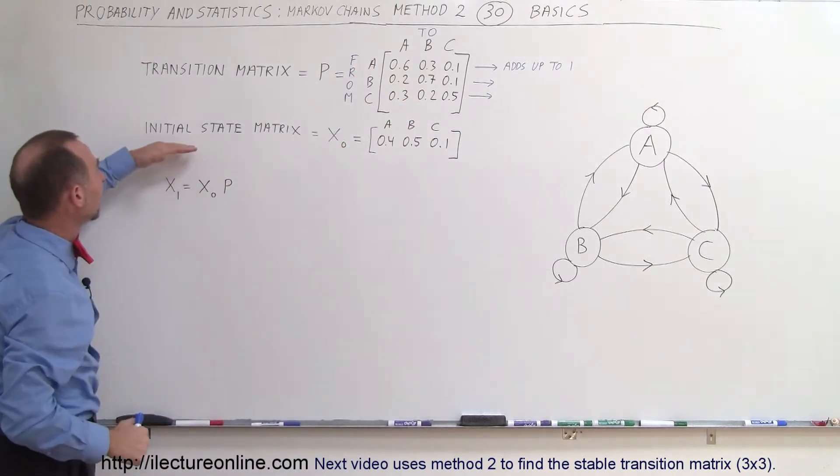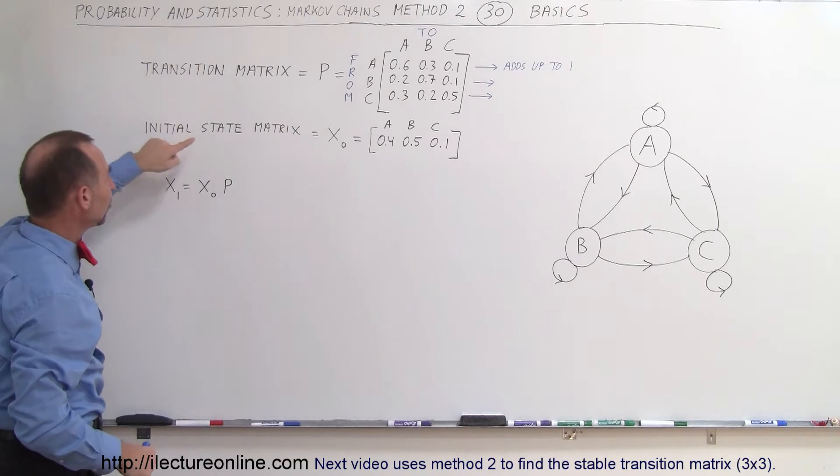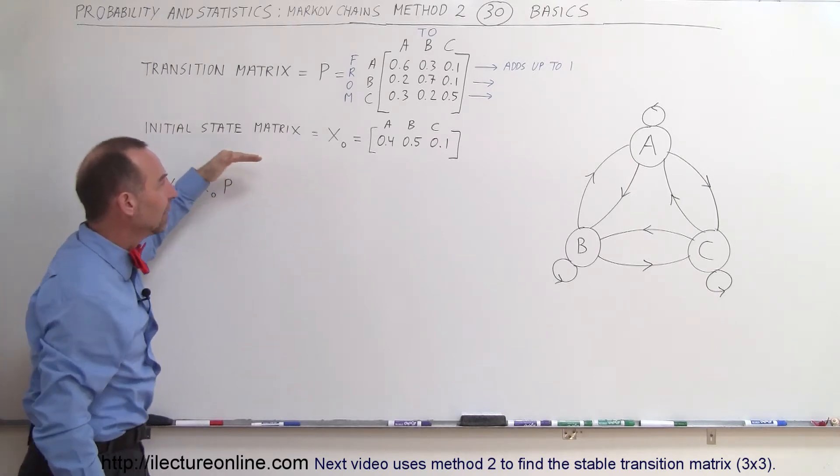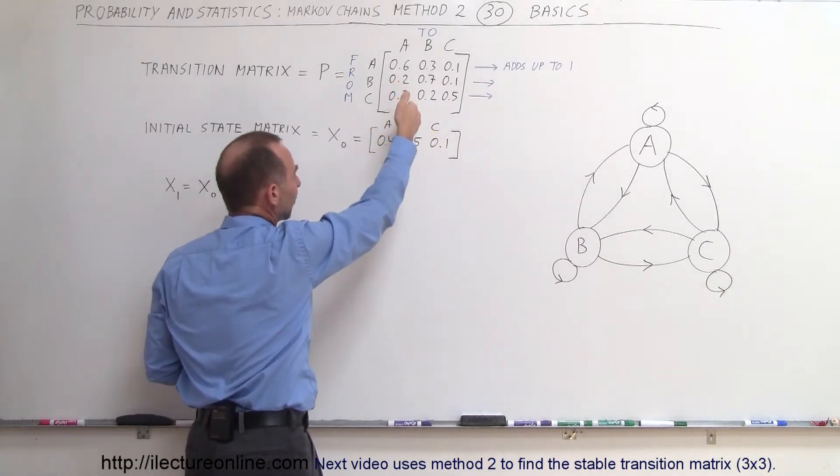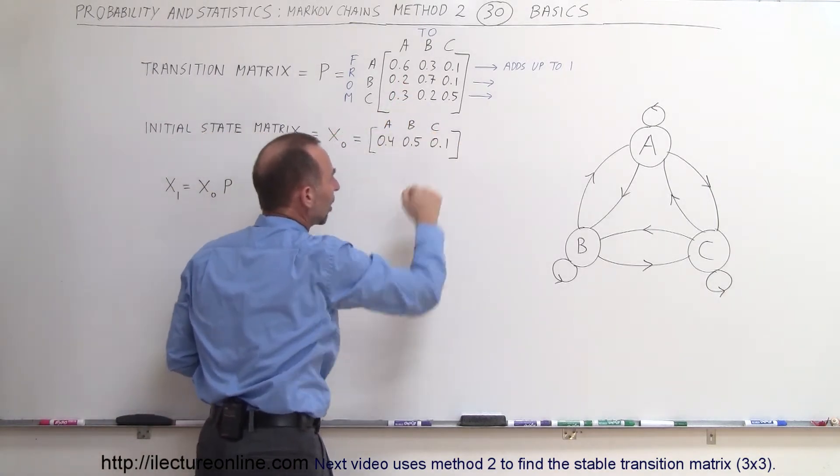Now what's also different is the state matrix. In this case the initial state matrix X sub 0 is written horizontally instead of vertically so the states ABC instead of having them in a vertical matrix they're in a horizontal matrix.